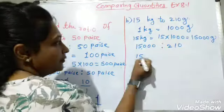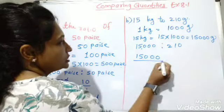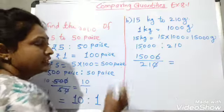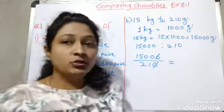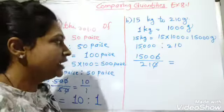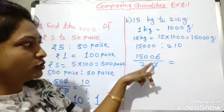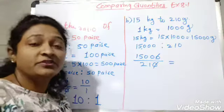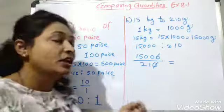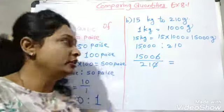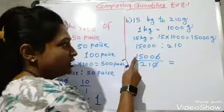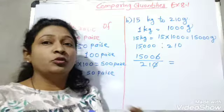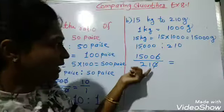Now we find the ratio of 15,000 to 210. Write it as a fraction: 15,000 upon 210. Cancel the zeros to get 150 upon 21. If you know divisibility rules, you can divide easily. Two plus one is three, and one plus five is six — both are divisible by three, so we divide both by three.